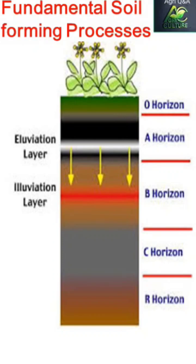Let's see the fundamental soil forming processes. Firstly, eluviation means the process of removing dissolved or suspended material from the soil layers — it is coming from upper layers to lower layers. Eluviation means washing out, whereas illuviation means whatever deposition of material removed by eluviation.